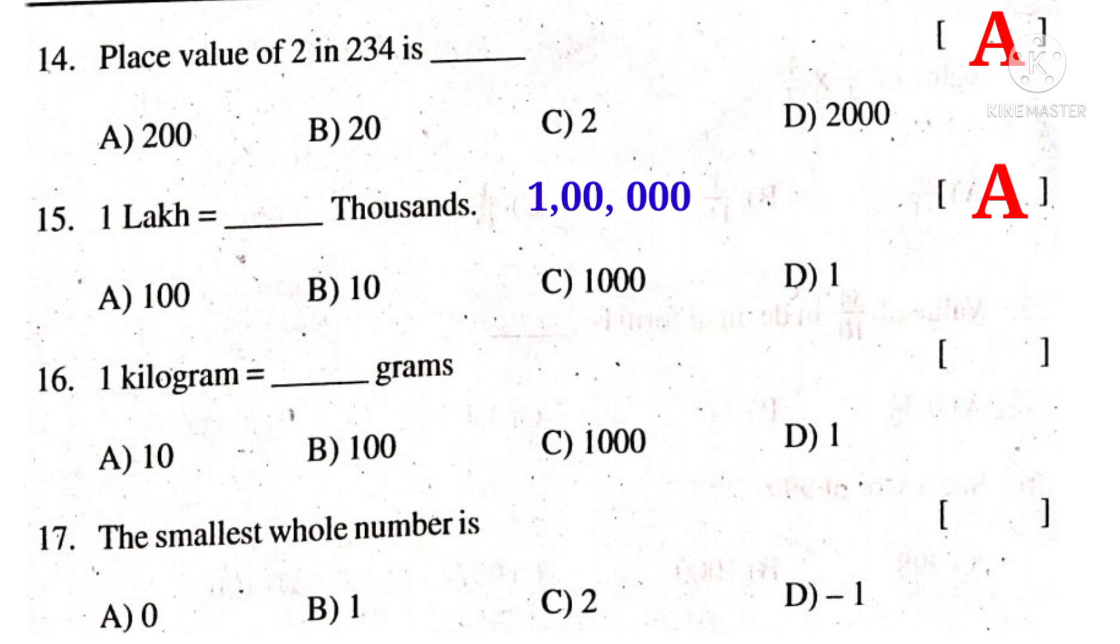1 kilogram is equal to dash grams. Observe the word - 1 kilo denotes 1000. So the correct choice is C. The smallest whole number is - the whole number set starts from 0, so the smallest number is 0. The correct choice is A.